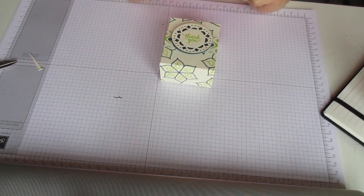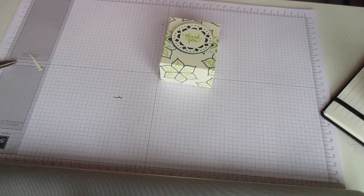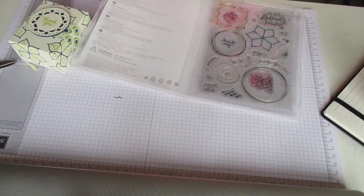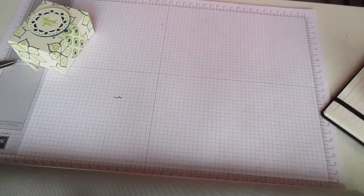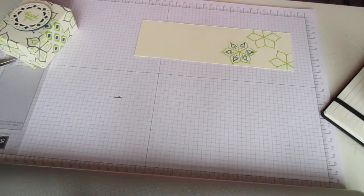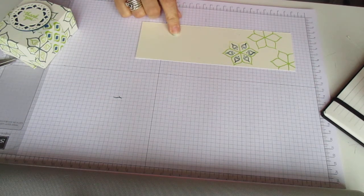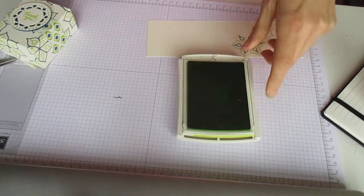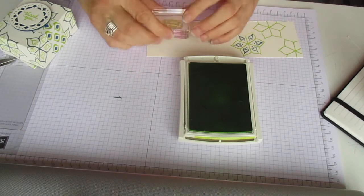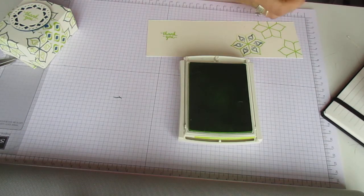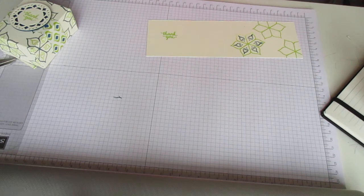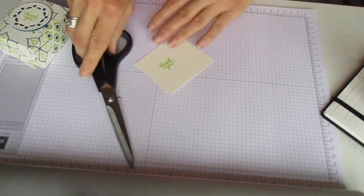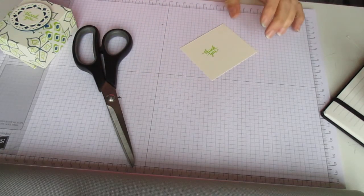I think I'm going to stamp it in the same color because I really like that. The stamp comes from the Eastern Beauty set. I'm going to stamp this onto some Very Vanilla cardstock. This is just the thank you. It doesn't matter that it's not particularly straight because we're going to die cut it.